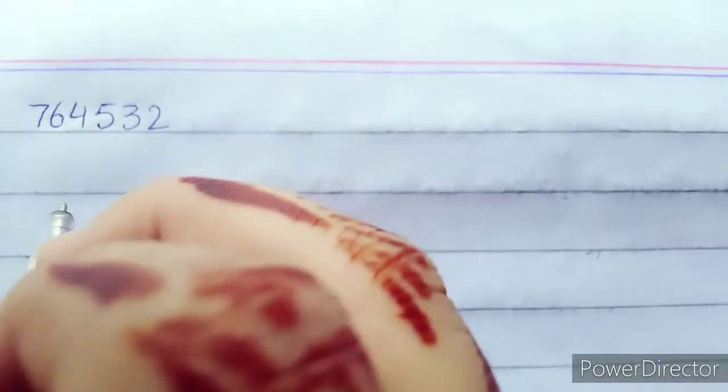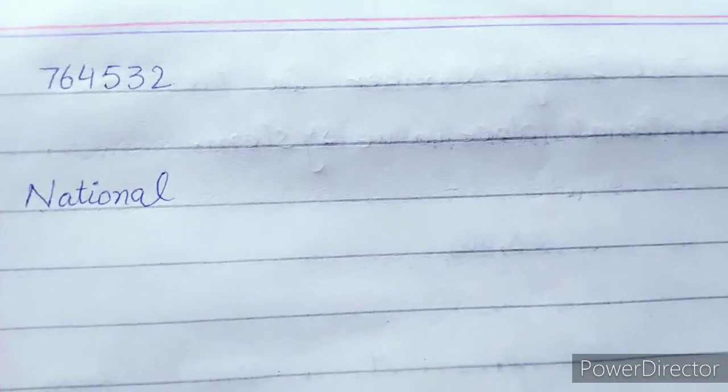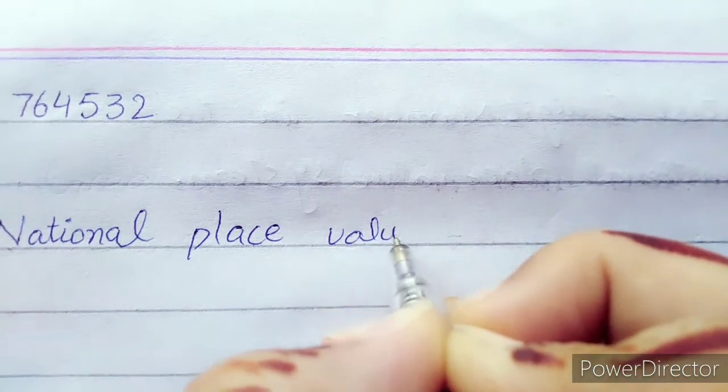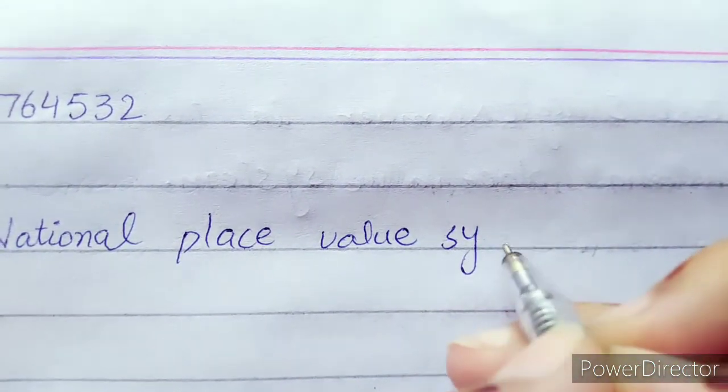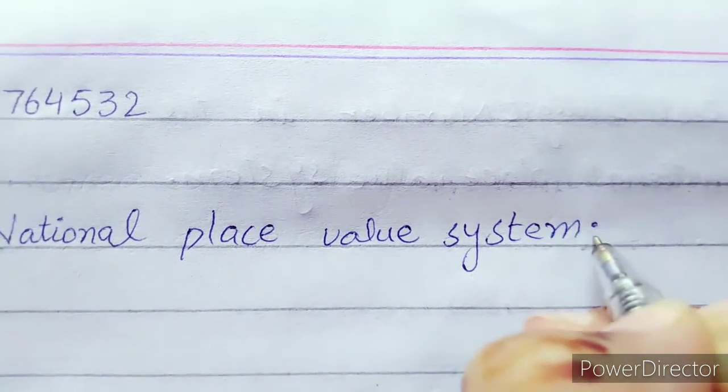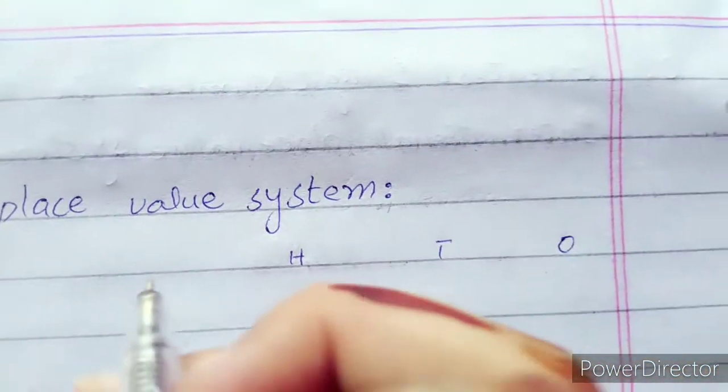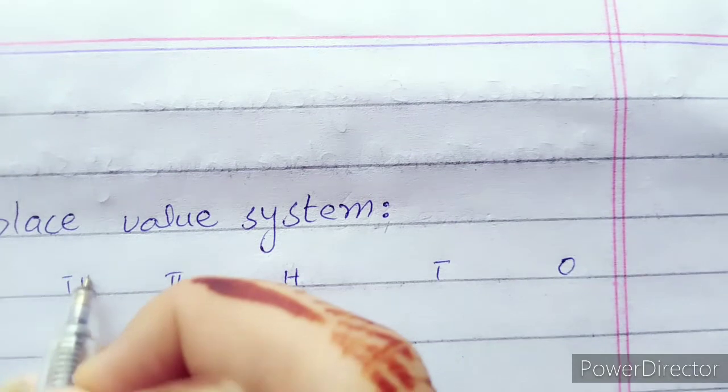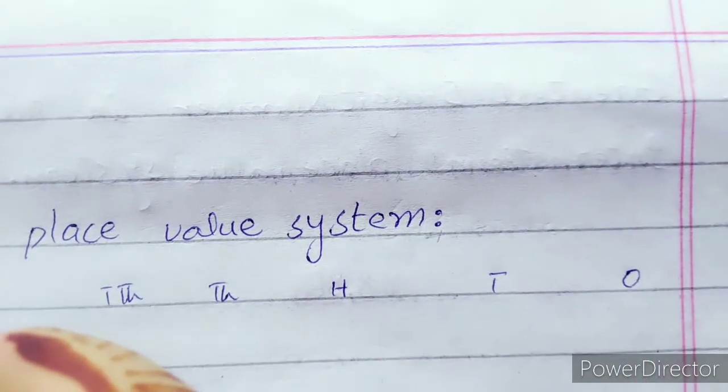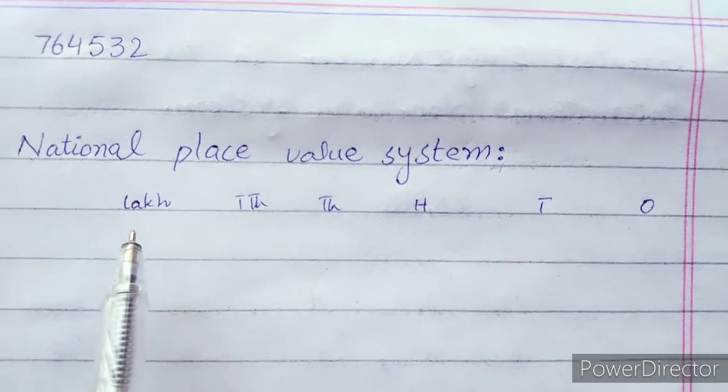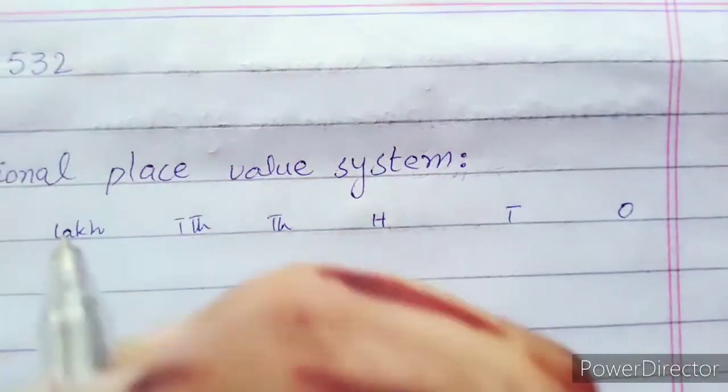First of all, we have to do our heading. Okay students, proper method and pattern. So now you have to solve questions. First of all, we would call national place value. Ones, tens, hundreds, thousands, ten thousands, and lakh.